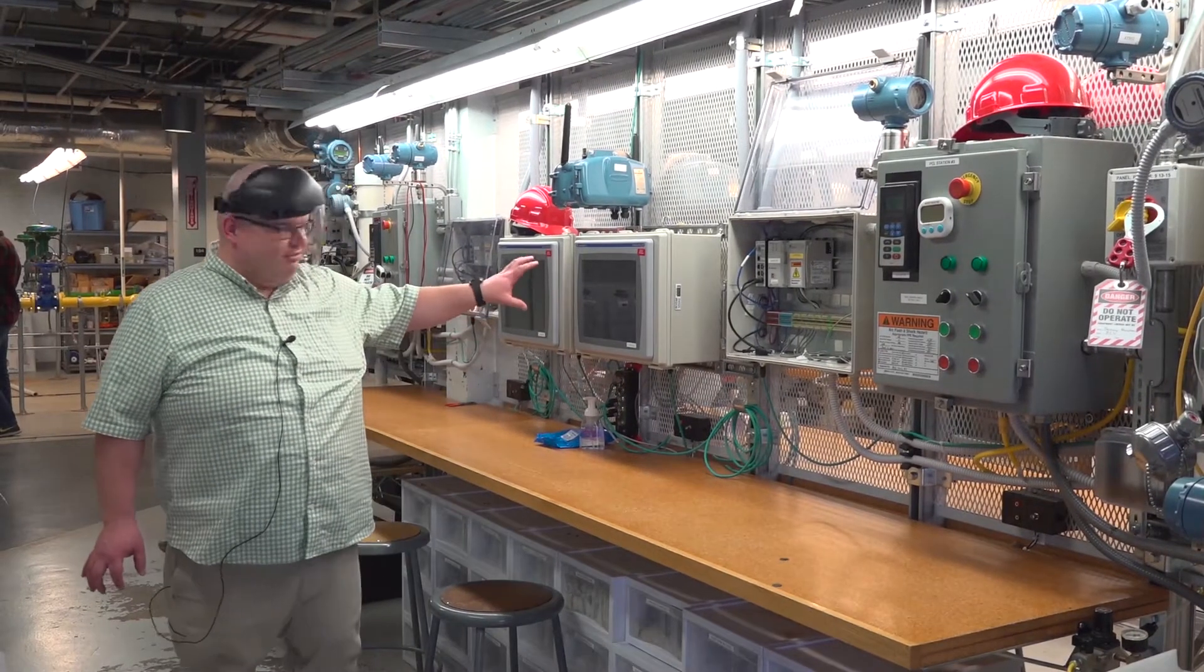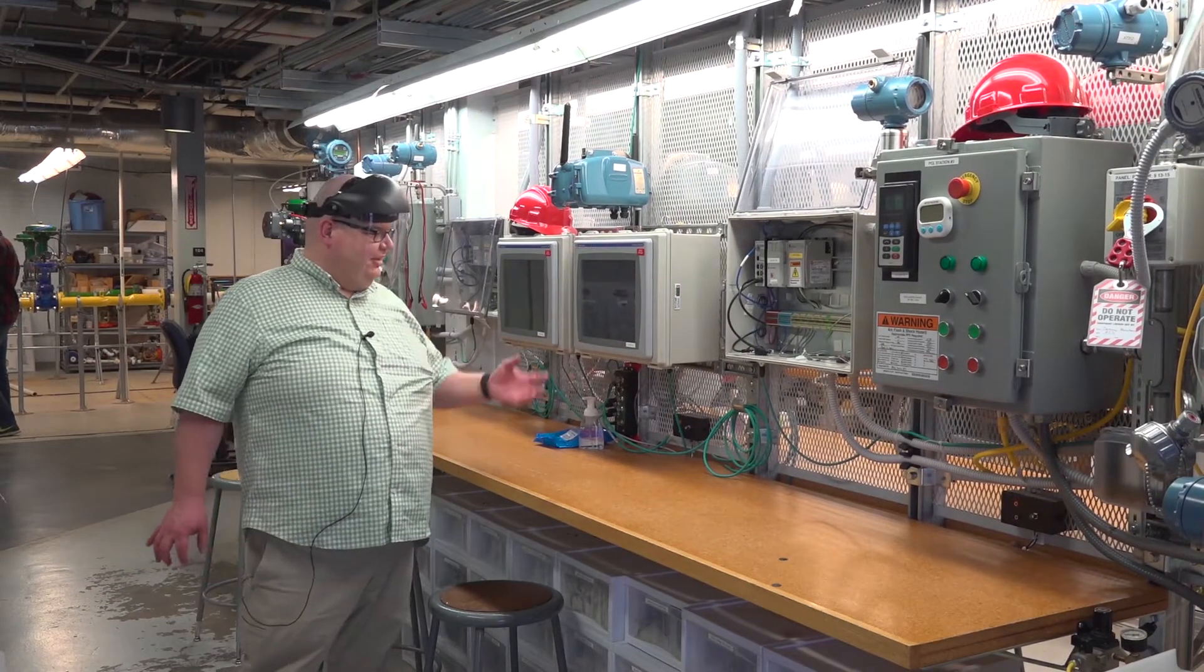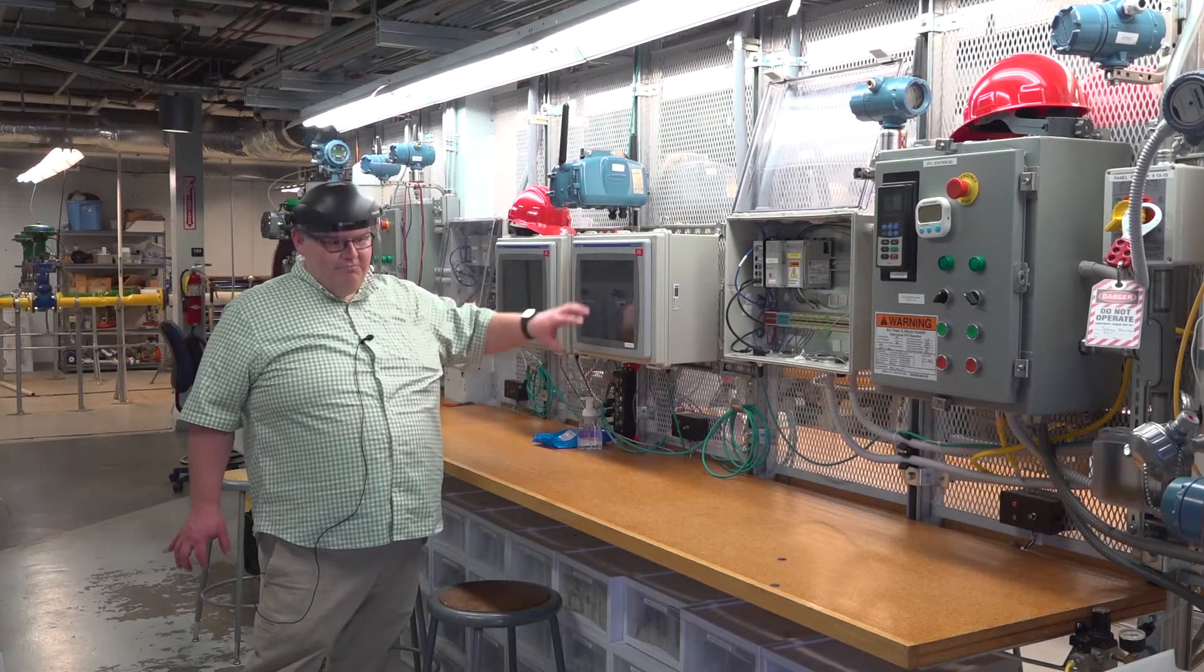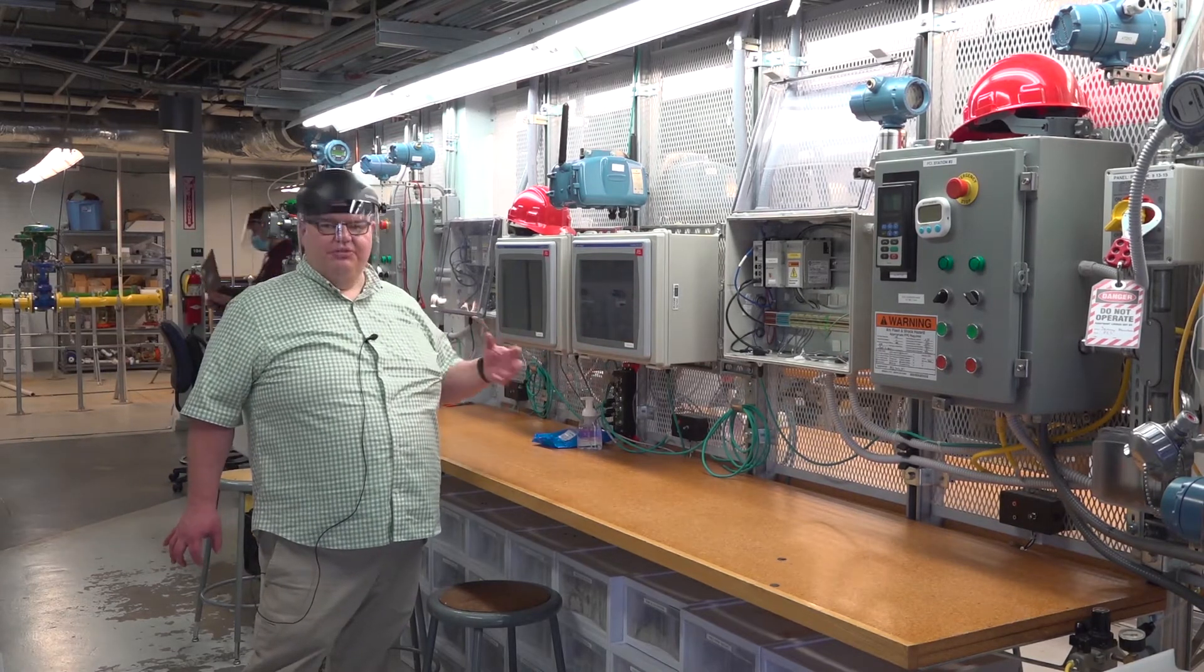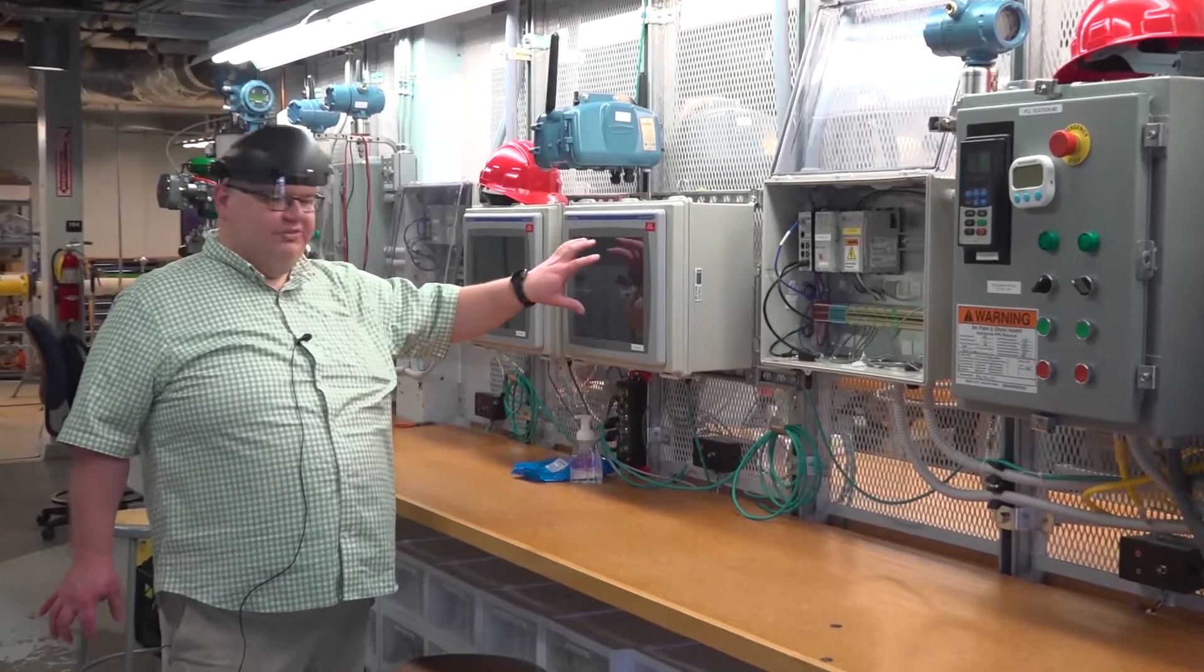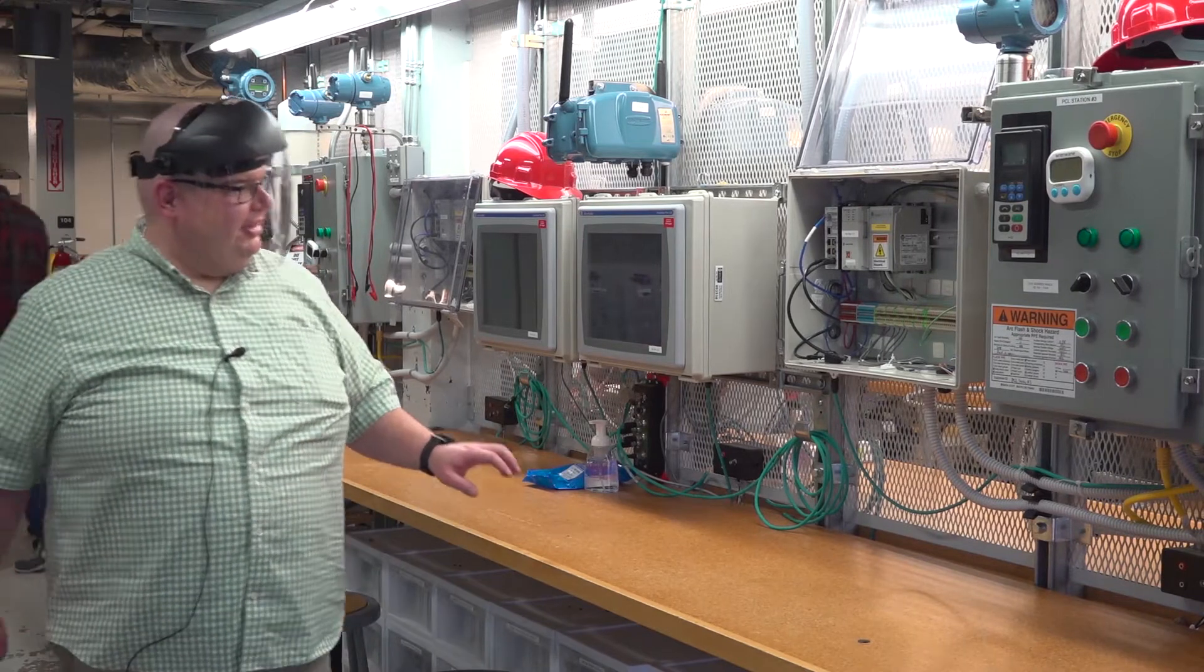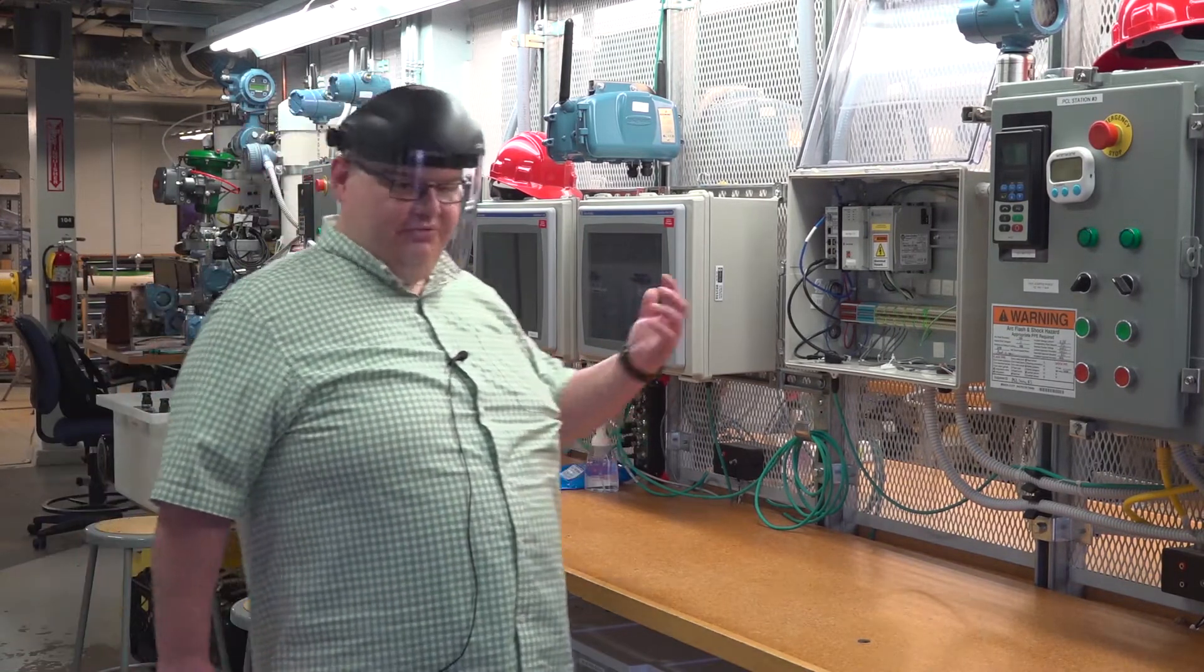Starting on the left here we have the HMI, the Human Machine Interface. It's a touch screen that we can use to do things like start and stop motors or measure things in our process. We'd see this on the screen and be able to program this to interface with our process. Students would learn how to program and use those in the program.